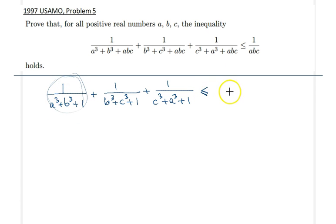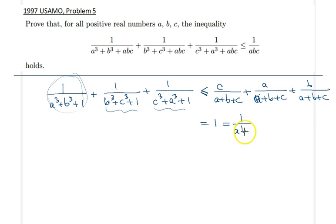But in an analogous way, we can easily replicate these to the other two terms. So we would have here A over A plus B plus C, and then B over A plus B plus C, and therefore this expression is just 1. But then 1 can be replaced with 1 over ABC confidently, because we already know ABC is 1.